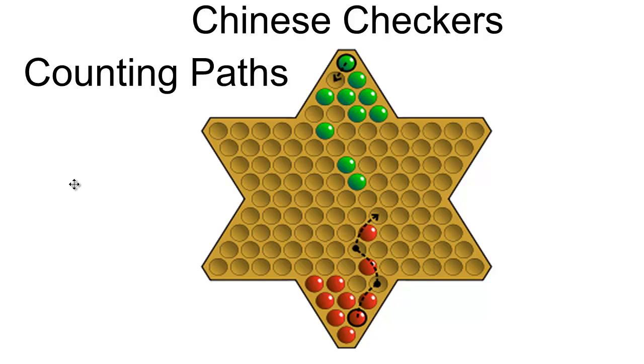We're going to be examining Chinese checkers in the same light that we examined Pascal's Triangle. In other words, we're going to be counting paths that your checker can take across a Chinese checkers board.